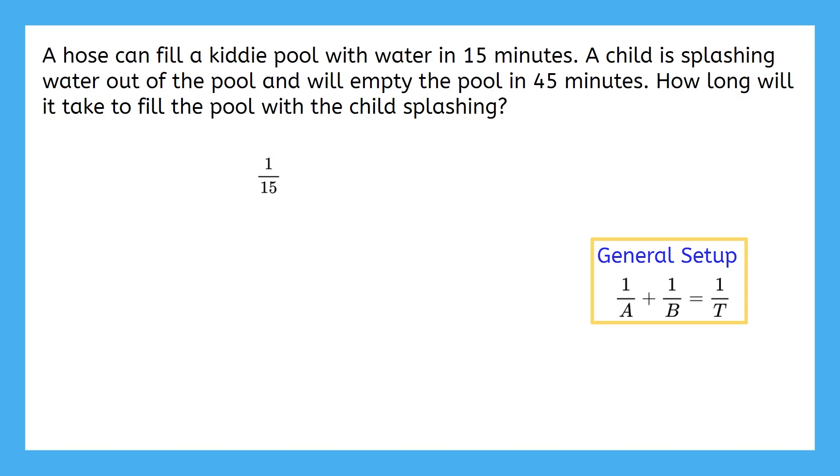Let's look at the child splashing. 45 would become 1 over 45, but it's not filling the pool, but taking water back out of the pool. So rather than adding 1 over 45, we have to subtract it here. Then we have our combined rate with x representing the minutes to fill the pool with the child splashing, which we don't know yet. Now that we have the setup done, let's see if you can finish this problem and interpret the answer on your own. Pause the video here and try it out.